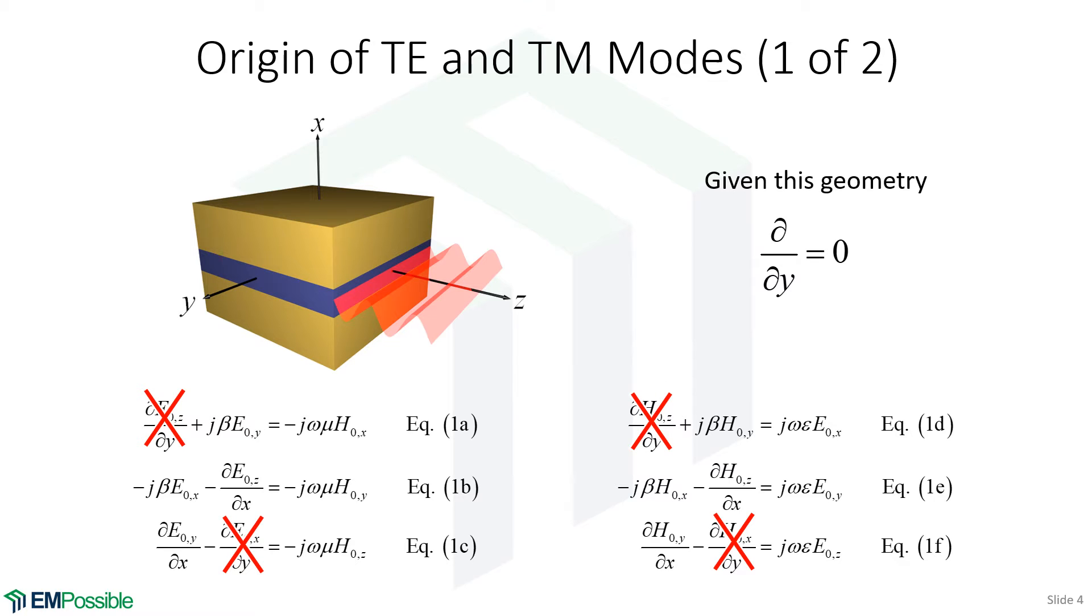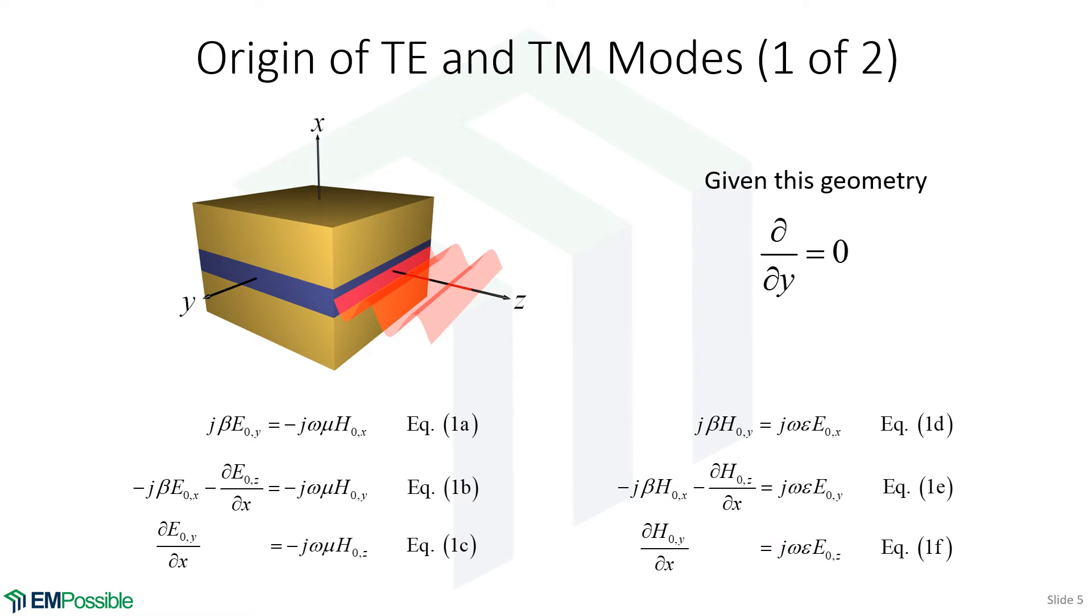Now, when we do this, something magical sort of happens. Here's our equations without those Y terms. Now what I'm going to do is color code the equations according to what I'm about to mention.